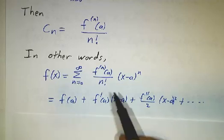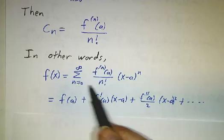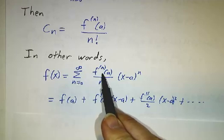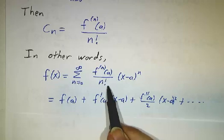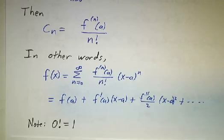The other thing to notice in this formula is it starts at n equals zero. So the zeroth derivative is just the function.